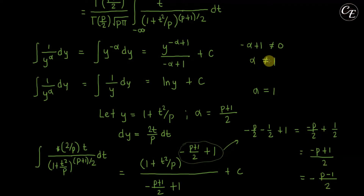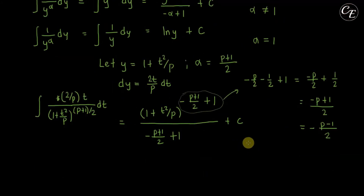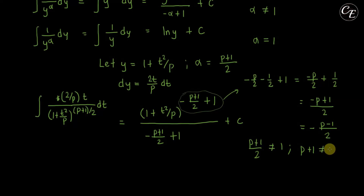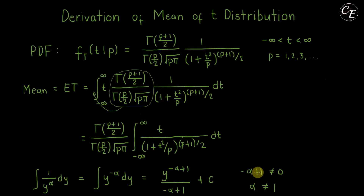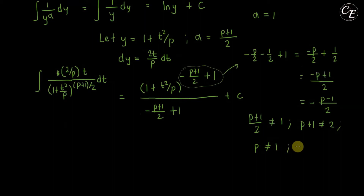For this formula to apply, alpha must not equal 1, meaning (p+1)/2 ≠ 1, which gives p ≠ 1. Since p must be a positive integer, this means p cannot equal 1 and must start from 2. So p = 2, 3, 4, and so on.